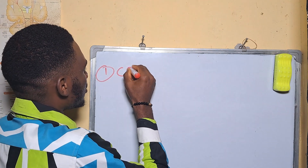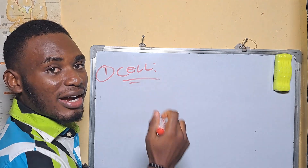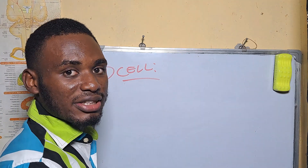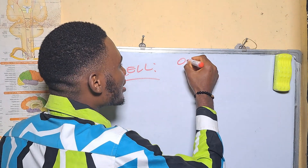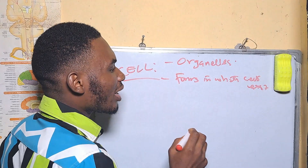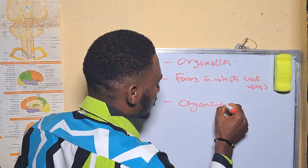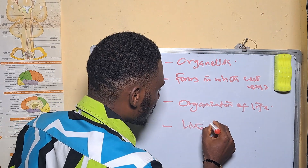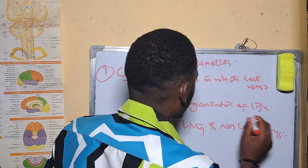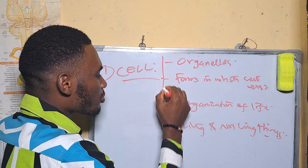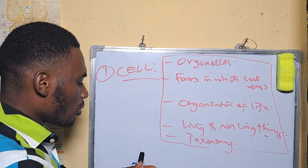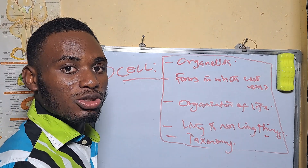Our first topic is cell. I am expressing this in a red marker owing to its high importance. This topic is like a number of topics that have some other subtopics in them. Under cell, you are supposed to know about the cell organelles, the forms in which cells exist, the organization of life, and living and non-living things, since cell is the bedrock of living things. Lastly, you also have to know about taxonomy. Cell is one of the most frequently asked topics in JAMB biology examinations.